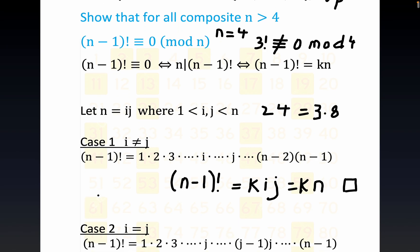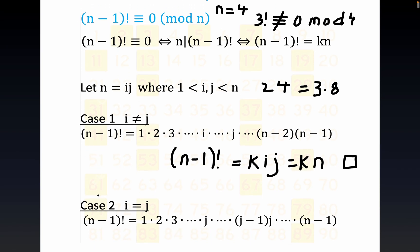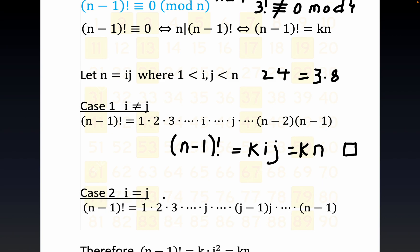The second case is when i is actually equal to j. When i is actually equal to j, that would mean we could write n as j squared or i squared. So in other words, this is the same as saying n equals j squared. But that means right here that this would be j squared minus 1 at the tail end here, right? j squared minus 1.